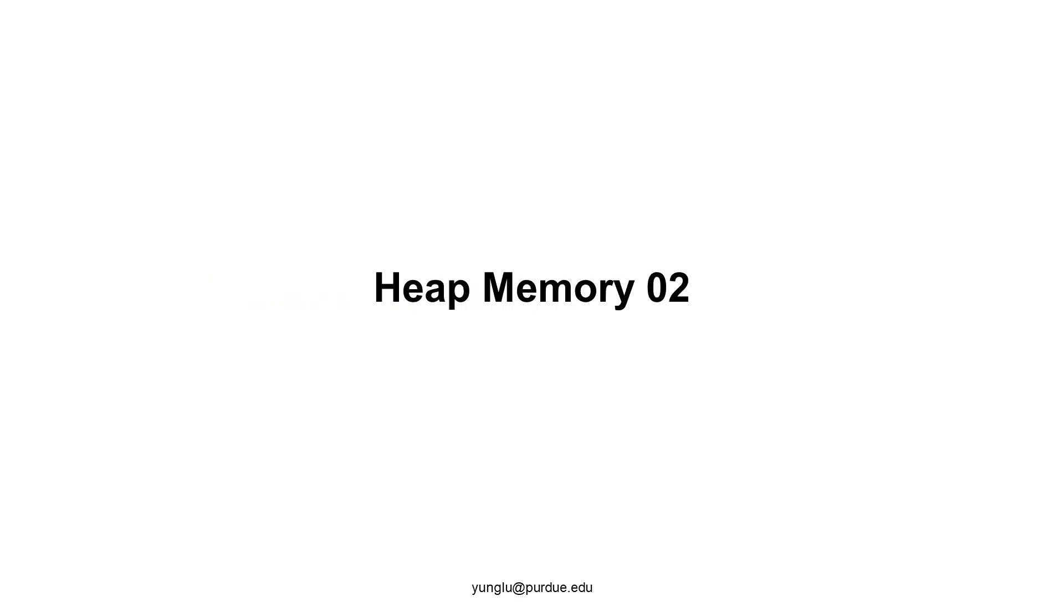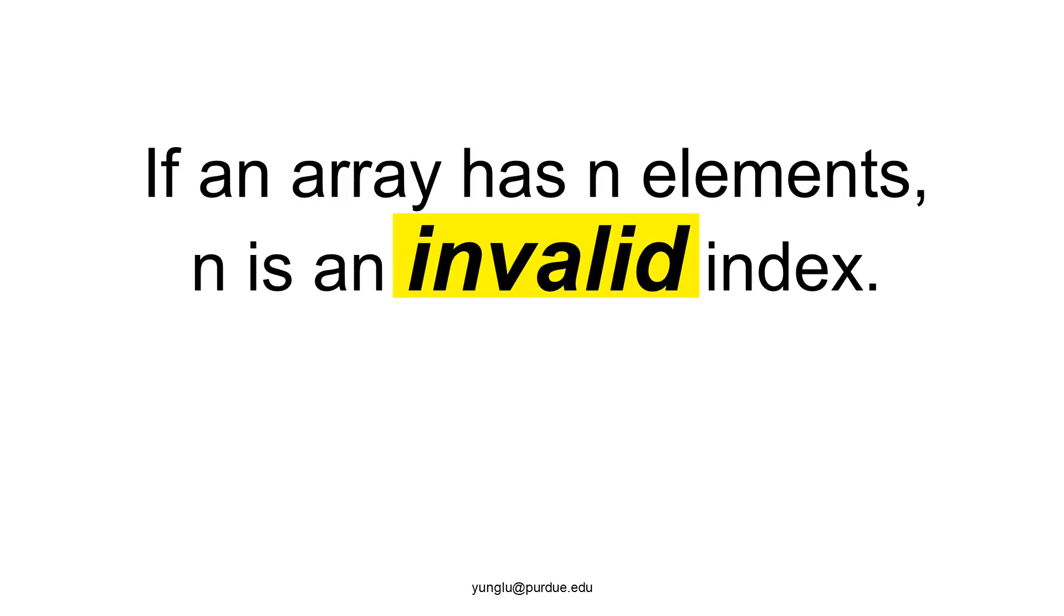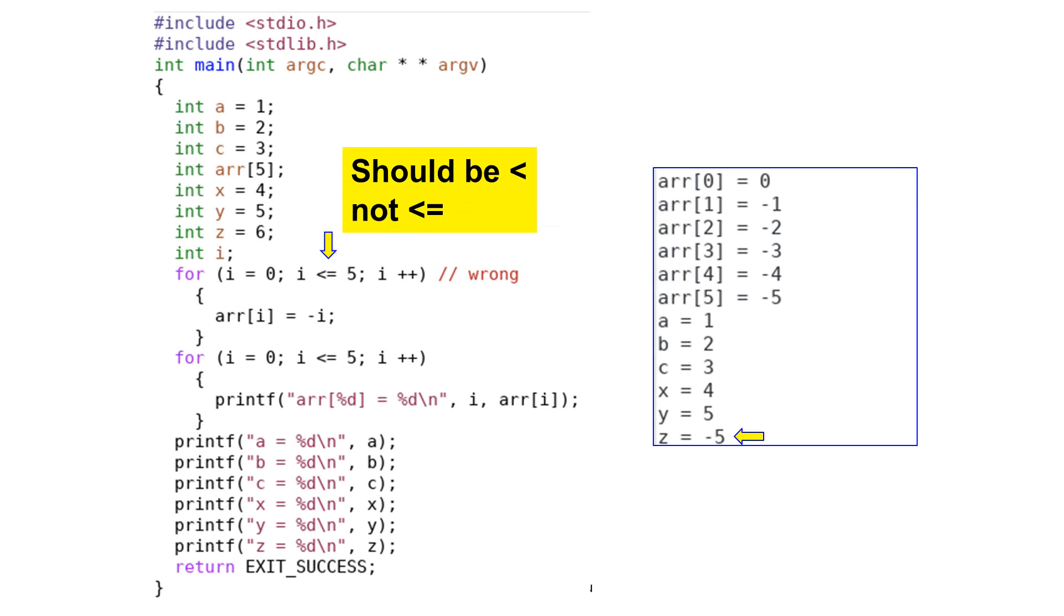This continues the topic about heap memory. Please remember that if an array has n elements, valid indexes are 0, 1, 2, up to n minus 1. n is an invalid index. Let me show you an example of what may happen if you use a wrong index.